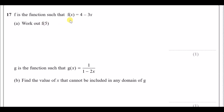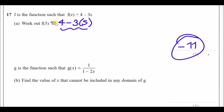f is the function such that f(x) = 4 − 3x. Work out f(5): simply replace x with 5, giving 4 − 3 × 5, which equals −11. These marks are easy — just replace x with the given value.